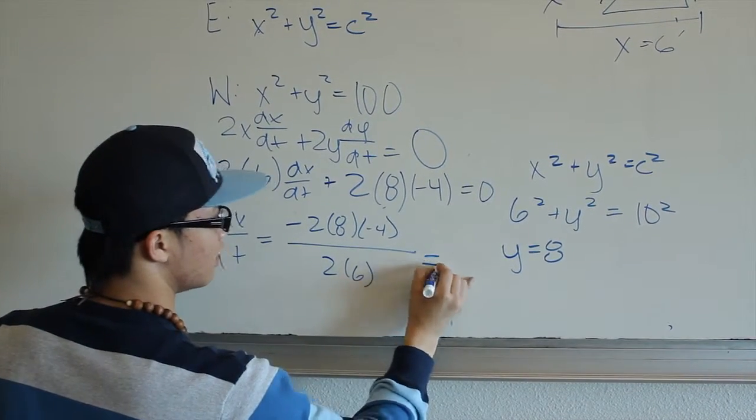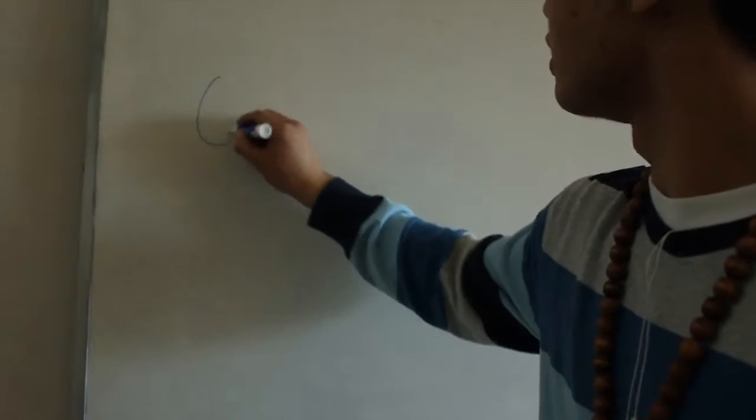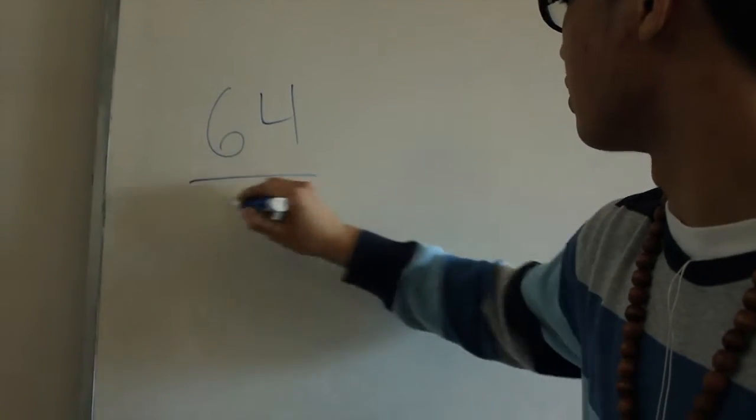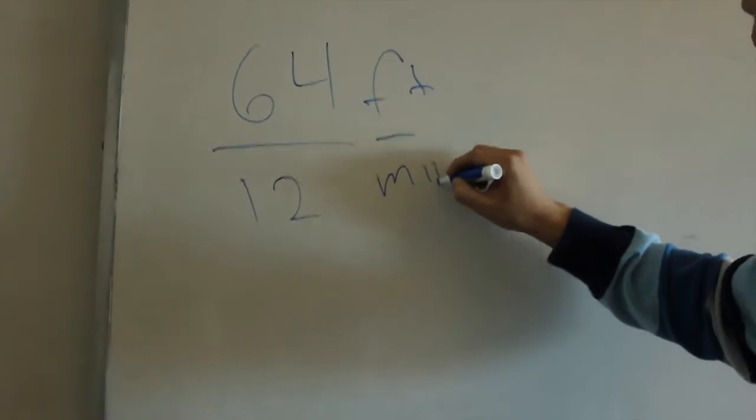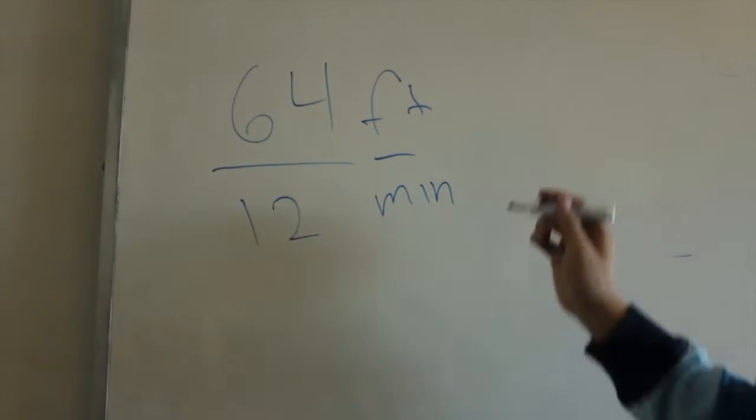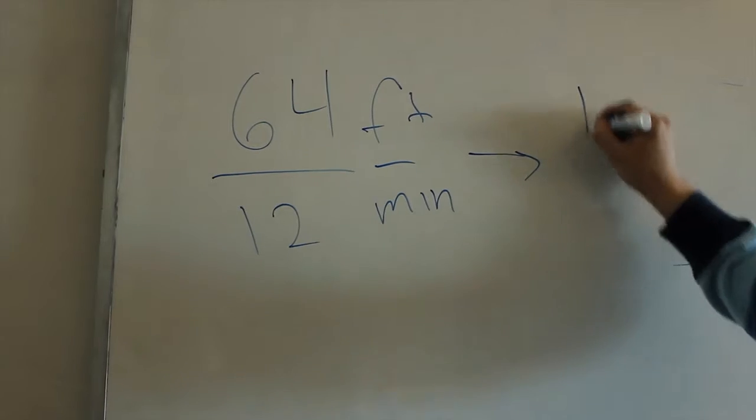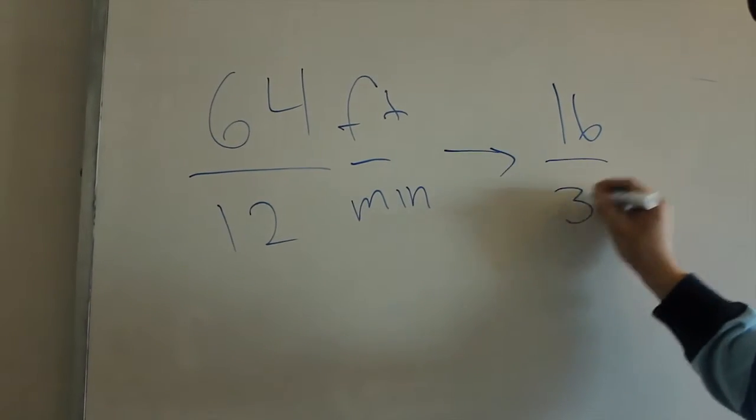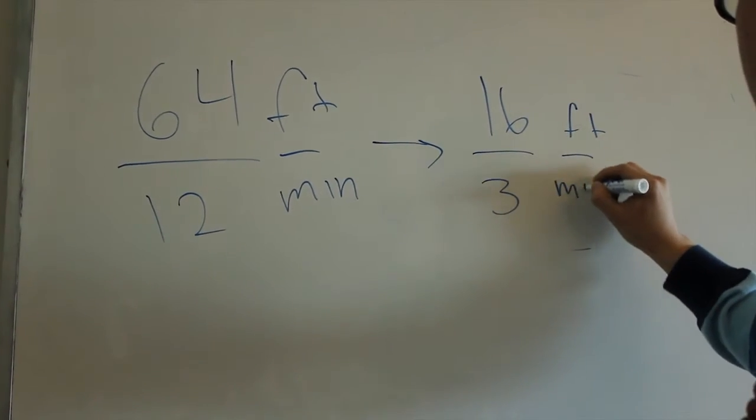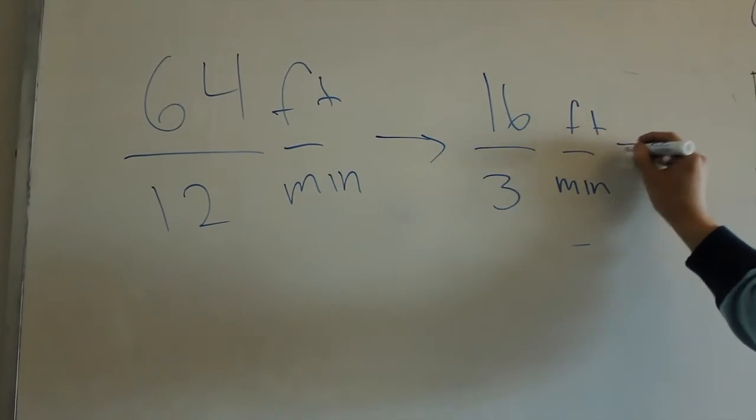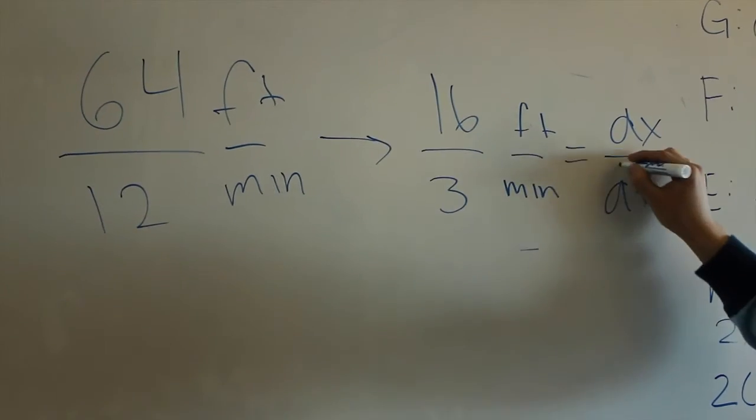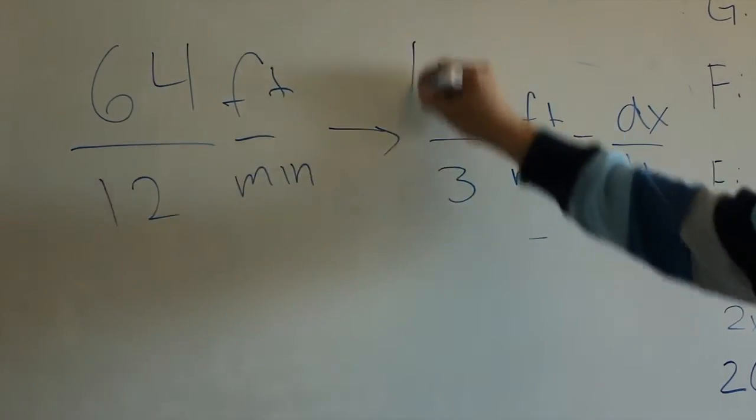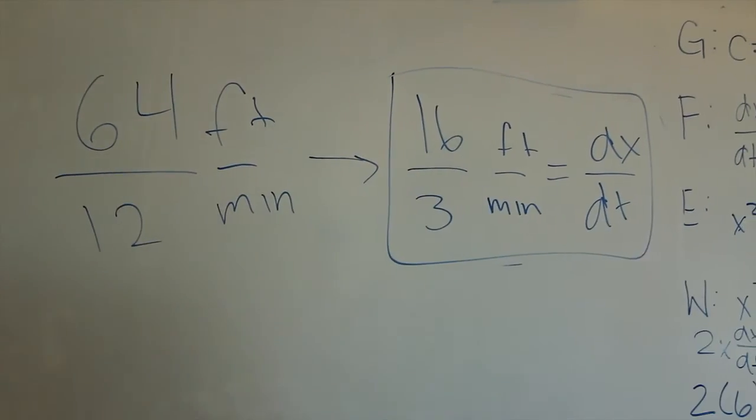Which should all equal to 64 over 12 feet per minute. Which can be reduced to 16 over 3 feet per minute. And this is the change of dx over dt before it hits Phillip's partner. And there you go.